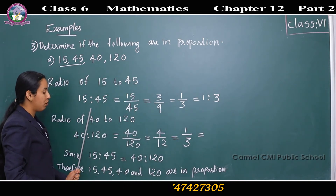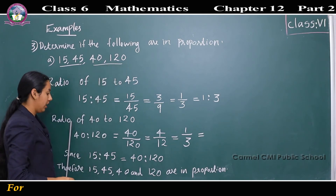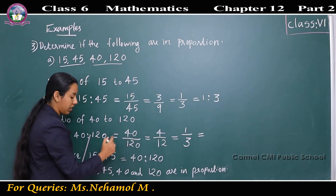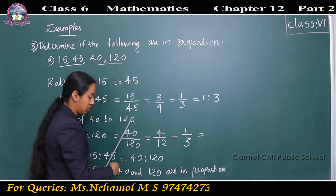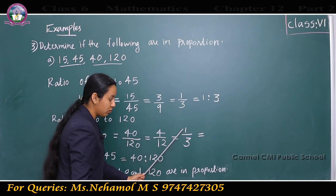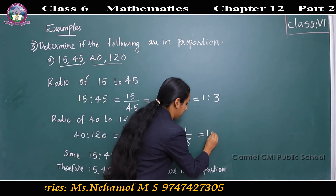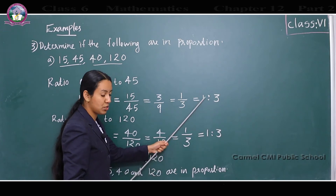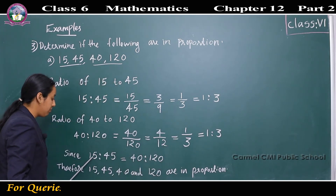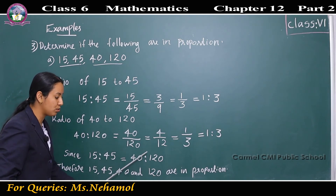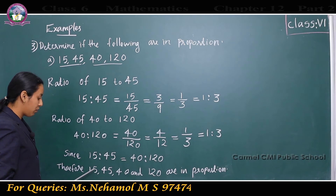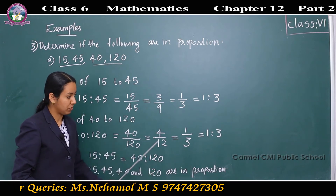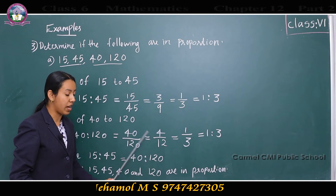Ratio of 40 to 120 equals 40 by 120. Converting to lowest form: 4 by 12, which equals 1 by 3, that is 1 is to 3. Since both ratios are equal — 15 is to 45 equals 40 is to 120 — therefore 15, 45, 40, and 120 are in proportion.